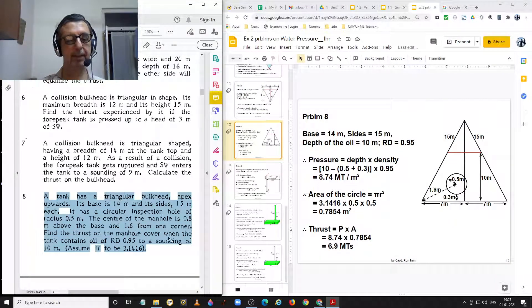A tank has a triangular bulkhead, apex upwards. Its base is 14 meters and its sides 15 meters each. It has a circular inspection hole of radius 0.5 meters. The center of the manhole is 0.8 meters above the base and 1.6 meters from one corner. Find the thrust on the manhole cover when the tank contains oil of 0.95 to a sounding of 10 meters. Assume pi to be 3.1416. So, here we have a triangular bulkhead, apex upwards, the base is down, the base is 14 meters and the sides are 15 meters each. It is an isosceles triangle.